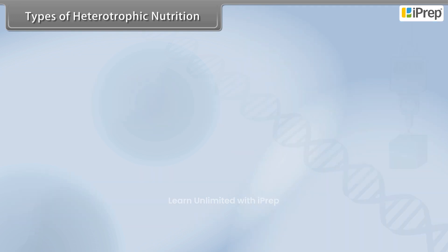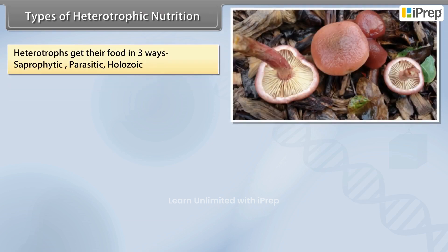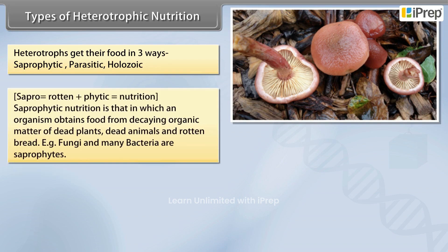There are three types of heterotrophic nutrition. Heterotrophs get their food in three ways: Saprophytic, Parasitic, and Holozoic. 'Sapro' means rotten and 'phytic' means nutrition.